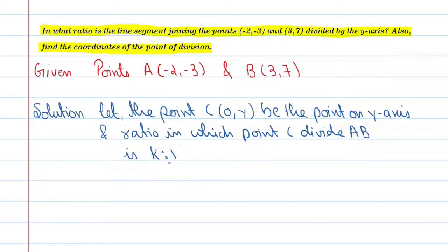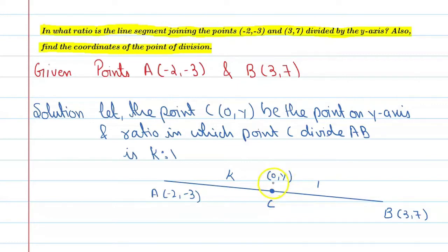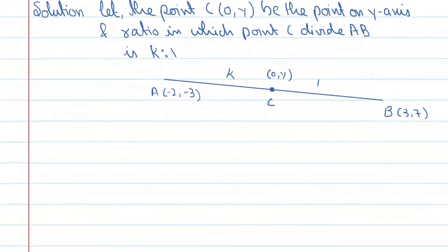इस चीज को और clarity से समझने के लिए हम एक figure draw कर लेते हैं। Figure में आप देख सकते हैं कि this is a line joining coordinates A minus two comma minus three and point B three comma seven. Point C on this line has coordinate zero comma y — क्योंकि y-axis पे है तो x की value zero होती है — and the ratio is k is to one.